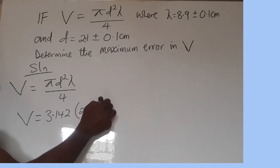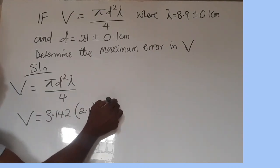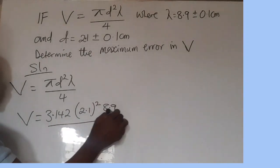We square it because d is having square. Then times the value of lambda, which happens to be 8.9.